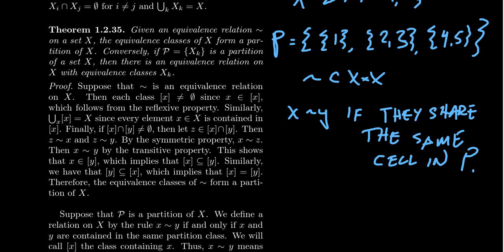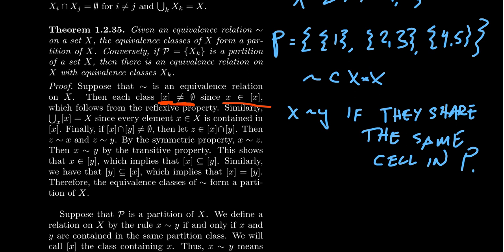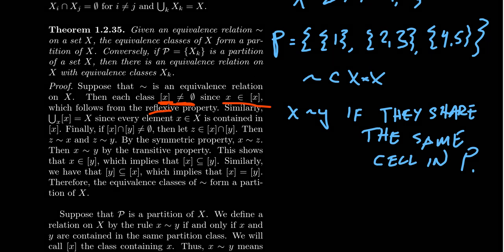How does one prove that? We have to prove both directions. So let's first start with an equivalence relationship — say that ~ is an equivalence relationship on X. We're going to show that the equivalence classes form a partition. To form a partition, we have to show that the sets are non-empty, their intersections are empty, and their union is the whole set. If you take an equivalence class — like the class that contains X — it's non-empty because X belongs to it by the reflexive property. So by the reflexive property, these cells are non-empty.